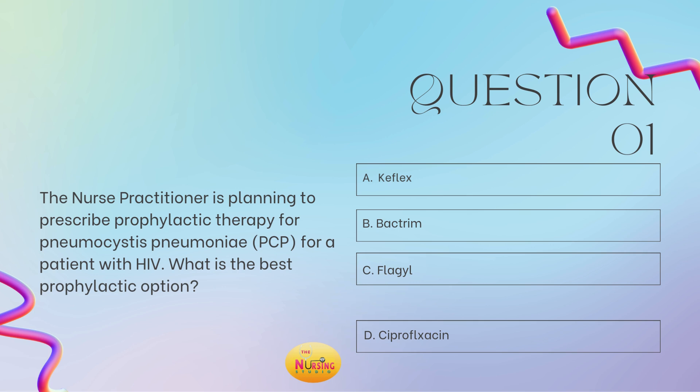Here they are telling us we're looking for the prophylactic treatment for PCP, pneumocystis pneumoniae. You might also see it as PJP, because this is an extremely, potentially fatal lung infection. Because HIV patients are immunocompromised, we want to give them prophylactic treatment to prevent them from potentially having this near-fatal lung infection. The first-line therapy we'd like to go with is B — Bactrim.